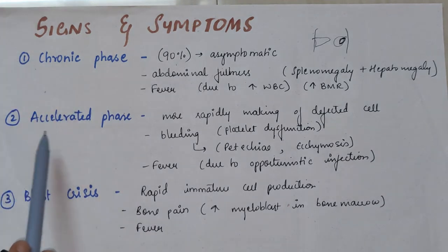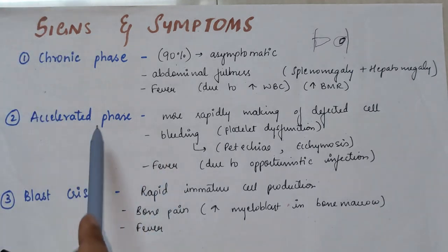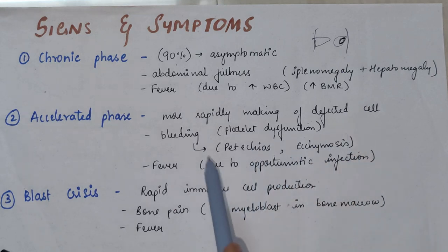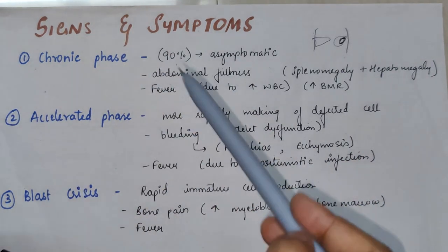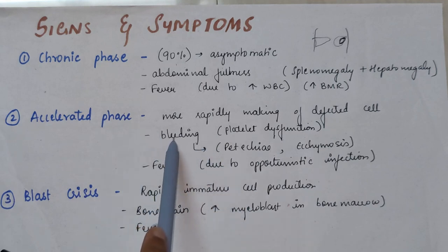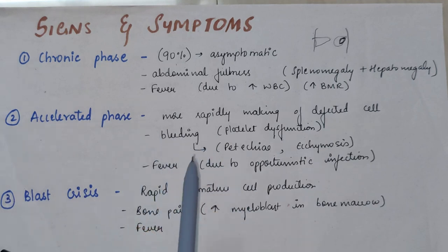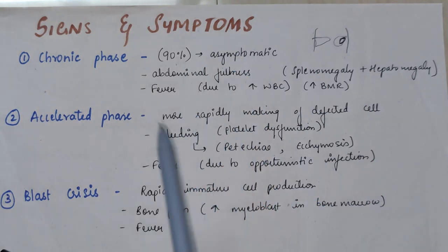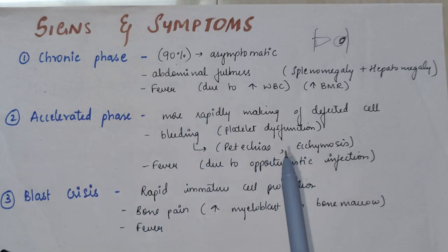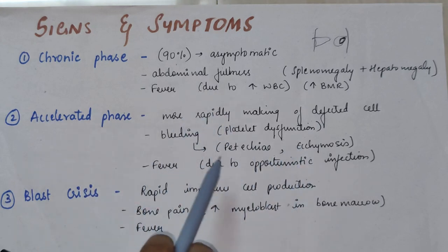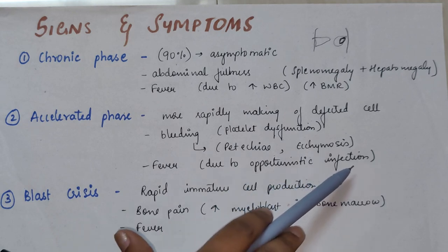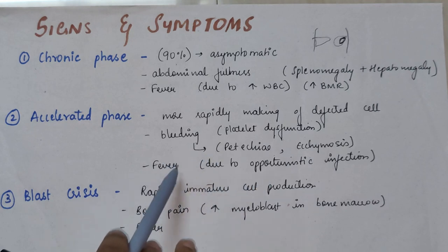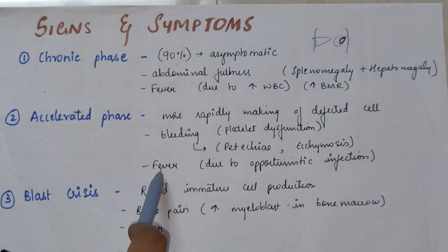In the accelerated phase, as the name suggests, there is speeding up — more rapid production of defective cells. The division is uncontrolled and happening at a faster pace. Due to platelet dysfunction, there might be bleeding, seen in the form of petechiae and ecchymosis. Fever may also be seen, due to opportunistic infections, as dysfunctional WBCs mean the body cannot withstand infection.